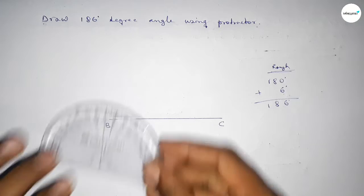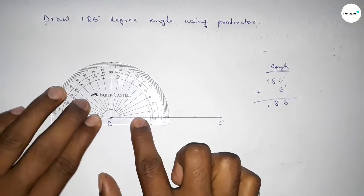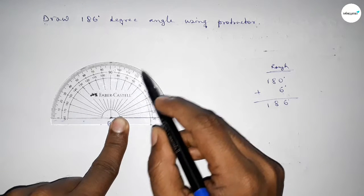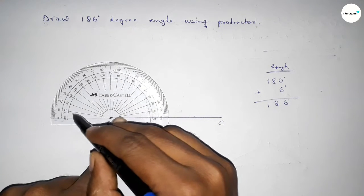Putting the protractor on point B perfectly, then counting the angle 180. This is 0, 10, 20, 30, 40, 50, 60, 70, 80, 90, 100, 110, 120, 130, 140, 150, 160, 170, 180.